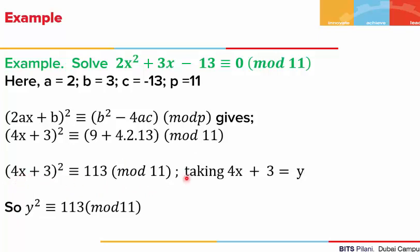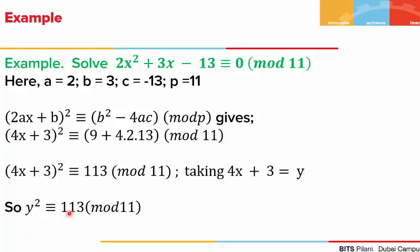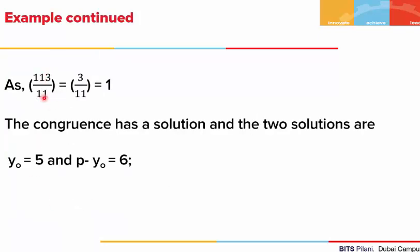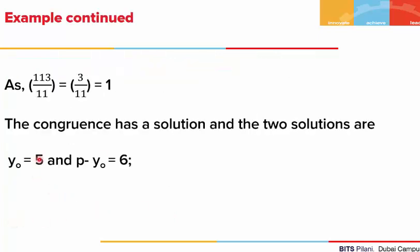Taking 4x + 3 as y, the congruence reduces to y² ≡ 113 mod 11. We check solvability using the Legendre symbol: (113/11). Replacing 113 by its residue mod 11 gives 3, and (3/11) = 1, so the congruence is solvable. One solution is y = 5, and the other is 11 - 5 = 6.